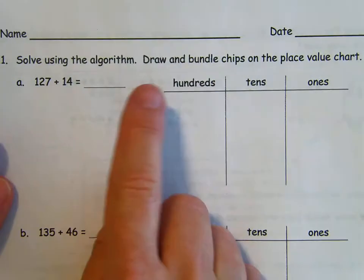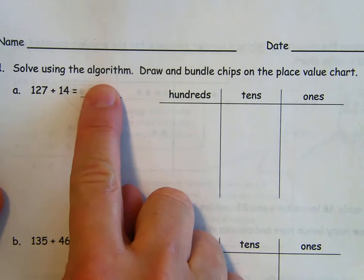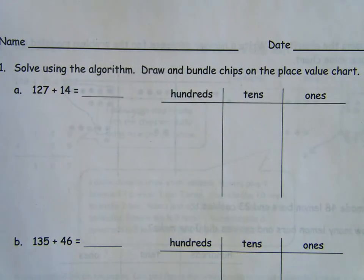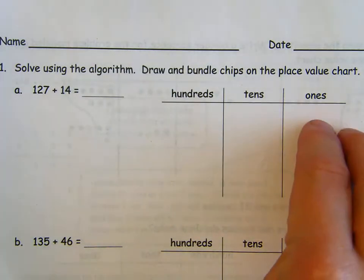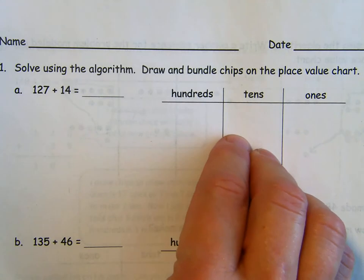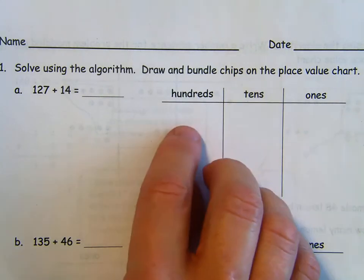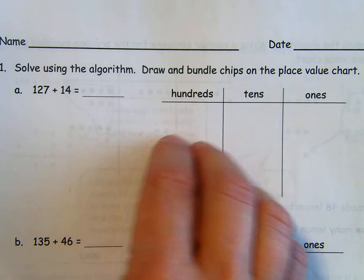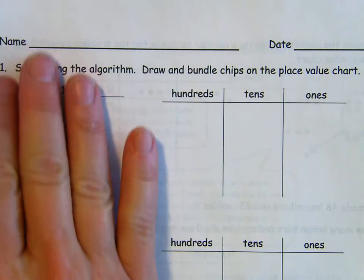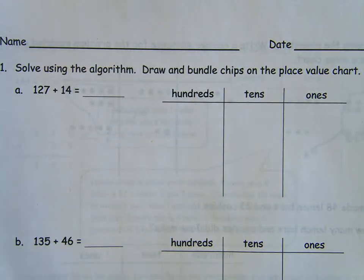We're going to be using our algorithm. When they say algorithm, they mean a strategy or a particular way of doing it. So we've been learning a particular way of bundling and making a 10. And if we have to, we will bundle and make 100. We've learned how to write it in our vertical form. So let's get started with that first.